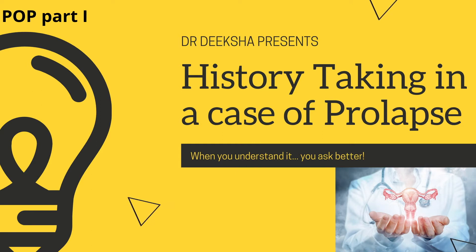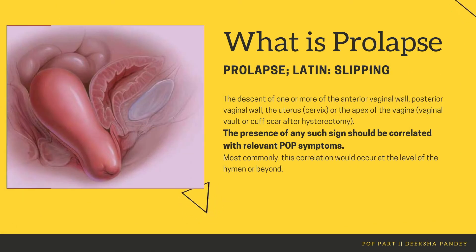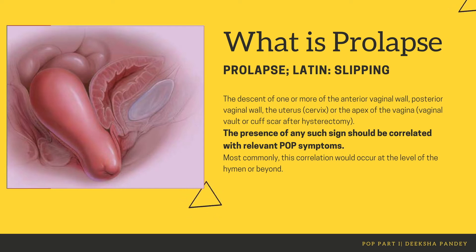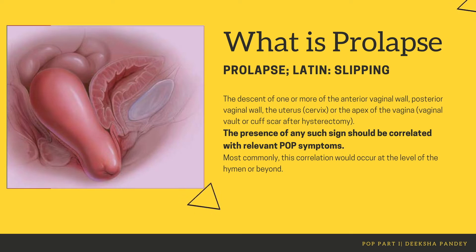Before we start, I want to know from you what actually is pelvic organ prolapse. Prolapse is a Latin word which means slipping — slipping of the uterus, anterior vaginal wall, and posterior vaginal wall, dragging other organs with it. An important thing to understand is that the presence of any such sign during examination should only be treated or correlated if symptoms are present in the patient. This correlation of signs and symptoms usually occurs when the prolapse is at the level of the hymen or beyond it.